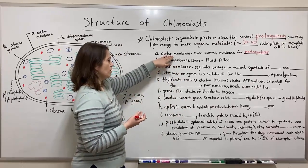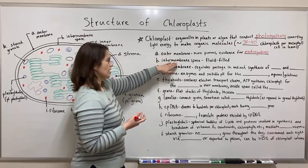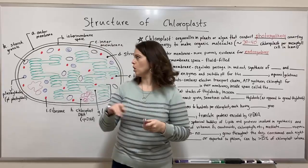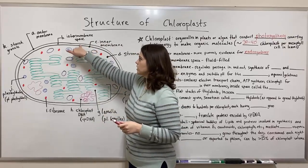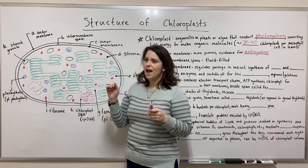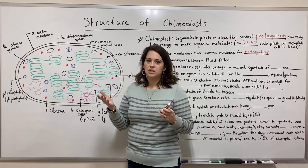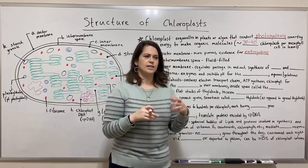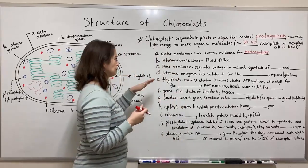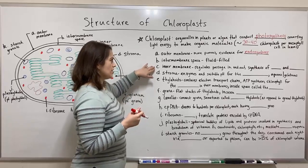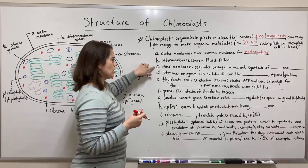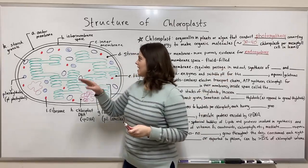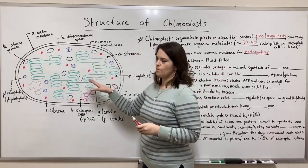Now inside the outer membrane there is the intermembrane space. It's just this small, fluid-filled compartment and it is mostly empty — there's fluid, but otherwise it's pretty empty. And then inside that we've got the inner membrane. The inner membrane regulates passage in and out a lot more.